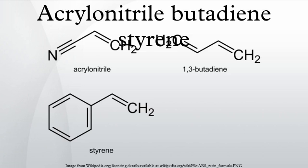ABS is a terpolymer made by polymerizing styrene and acrylonitrile in the presence of polybutadiene. The proportions can vary from 15 to 35% acrylonitrile, 5 to 30% butadiene, and 40 to 60% styrene.